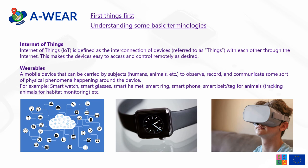Before we start our discussion about the internet of wearable things, we need to understand that this term is basically a combination of two different terminologies which are internet of things and wearables. Internet of things is defined as the interconnection of devices with each other through the internet, which makes the devices easy to access and control remotely as desired. This figure here on the left shows an overall picture of the IoT technology where your everyday devices including your personal gadgets, home appliances, car and office equipment, all are connected to the internet cloud, which enables you to access all your devices from anywhere, anytime, through the internet.